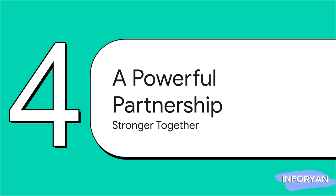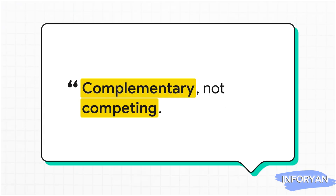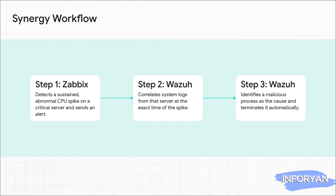This brings us to what might be the most important point of this entire explainer. This isn't about Zabbix versus Wazuh. The real magic happens when you stop thinking of them as competitors and start seeing them as partners. They aren't rivals — they're complementary. The most effective strategy isn't about picking one over the other; it's about using both to create a view that's greater than the sum of its parts. Here's a perfect workflow: Step one, Zabbix spots a weird CPU spike on a server and fires off an alert. Step two, that alert triggers Wazuh to dive deep into the logs from that server at that exact time. Step three, Wazuh finds the root cause — some malicious process — and can even be set up to kill it on the spot.